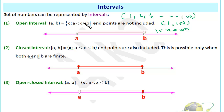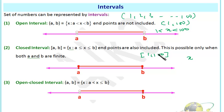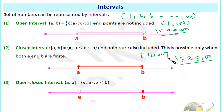The closed interval includes the endpoints. The difference between open and closed is that in open, a and b are not included, but in closed, a and b are included. In the closed interval [1, 100], any number x satisfies: x is greater than or equal to 1 and less than or equal to 100. In the closed interval you consider all numbers from 1 to 100 inclusive of 1 and 100, whereas in open you exclude 1 and 100.